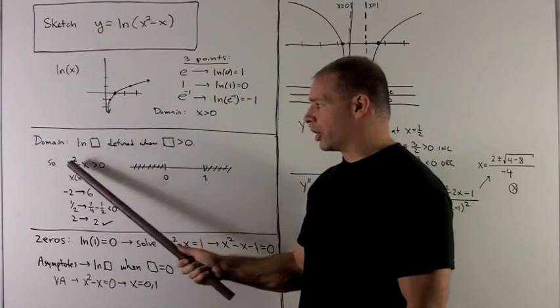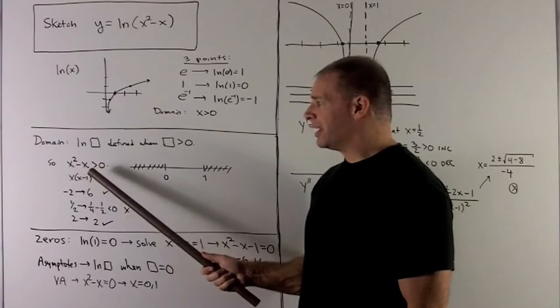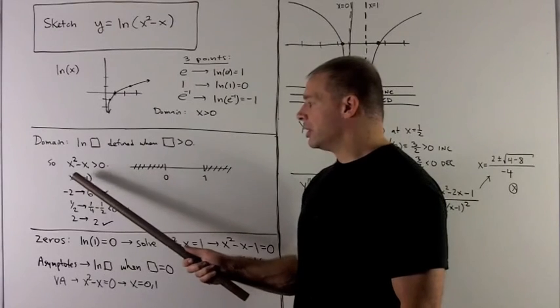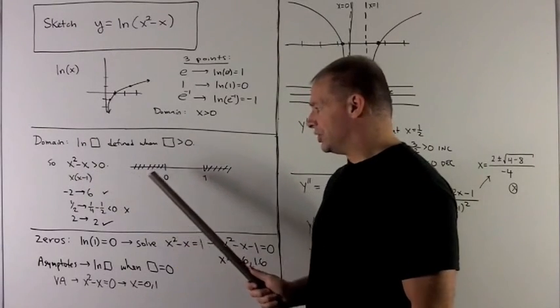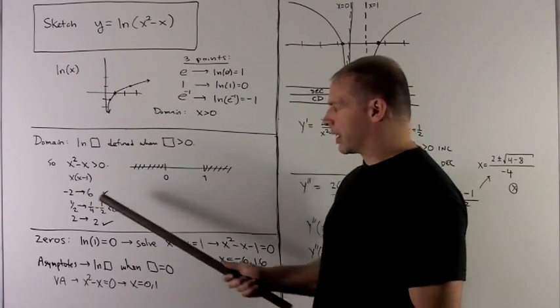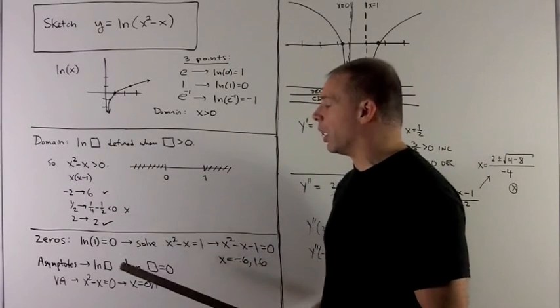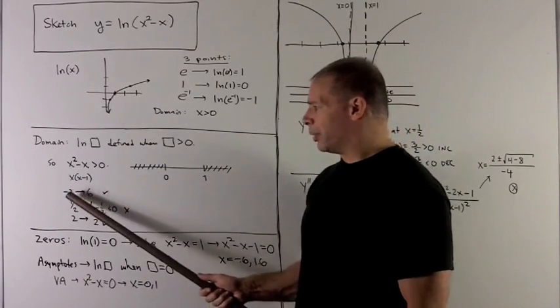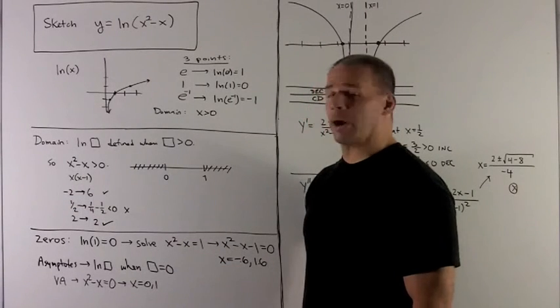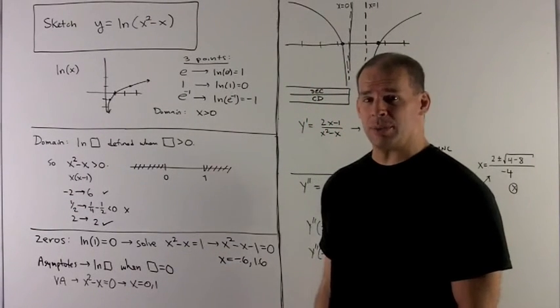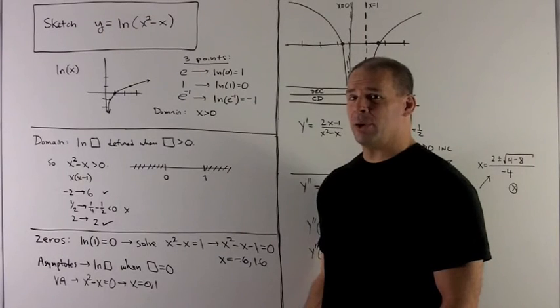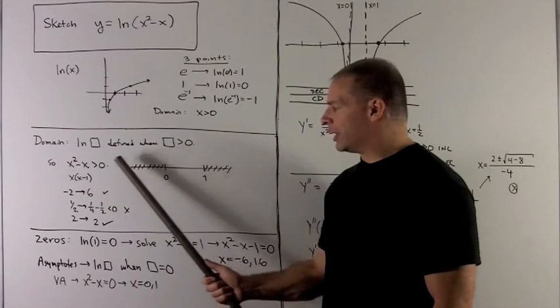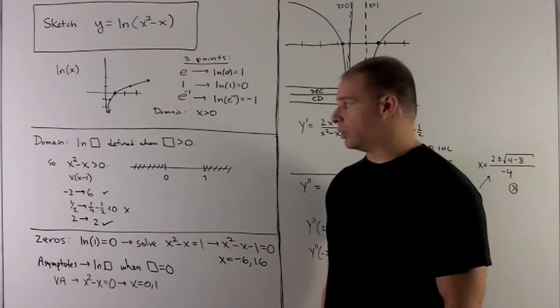To figure out where that occurs, I'm going to factor, set it equal to 0 to get boundary points, and then check a point in each region. So the zeros will be at 0 and 1, because when I factor I get x times x minus 1. Check a point in this region: I put minus 2 in here, I get 4 minus minus 2, which gives me 6, which is positive. So this whole region less than 0, I can use.